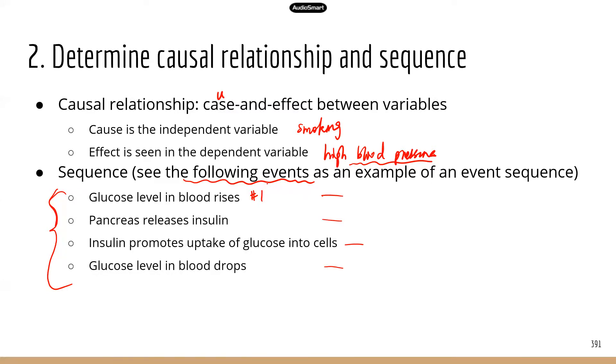So the trigger for insulin release is a high glucose level in the blood. This is going to be number one in this series of events. Glucose level in blood rises, and this is going to trigger number two. This is going to promote the pancreas to release insulin.